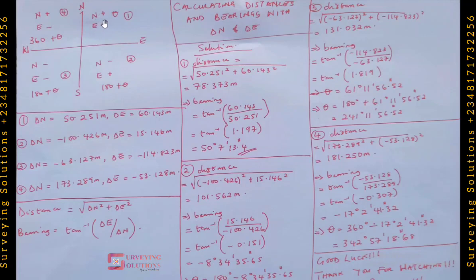Going clockwise to quadrant two, you find a negative northing because you are now towards the south, whereas you are still on the positive easting side. That's why northing is minus and easting is plus for quadrant two.